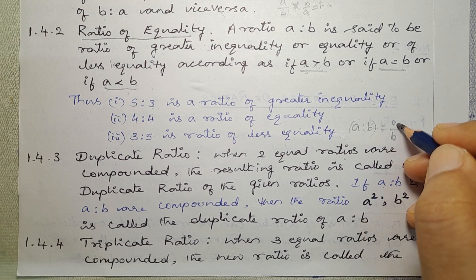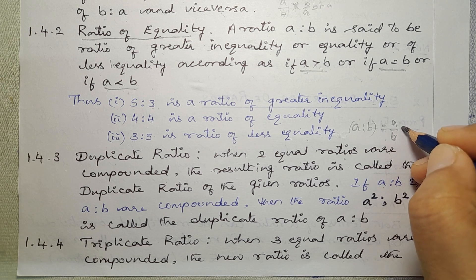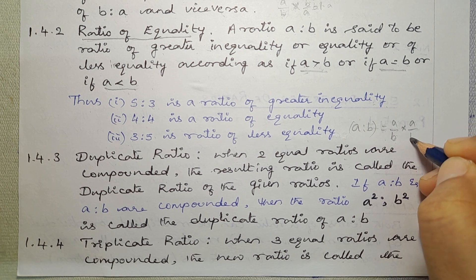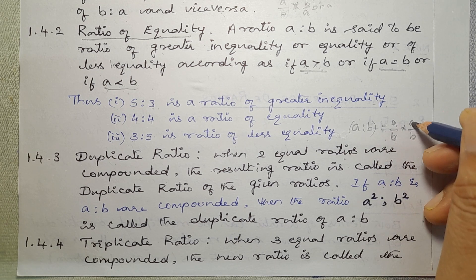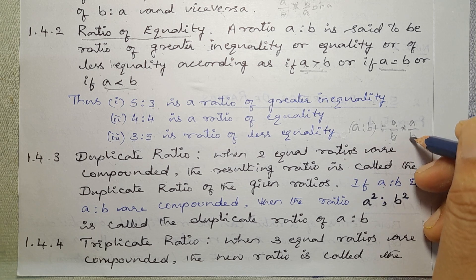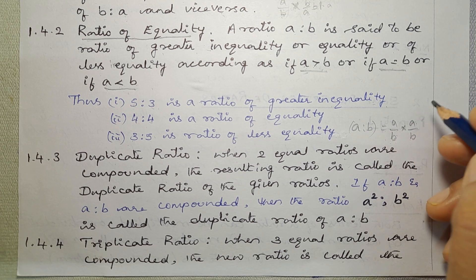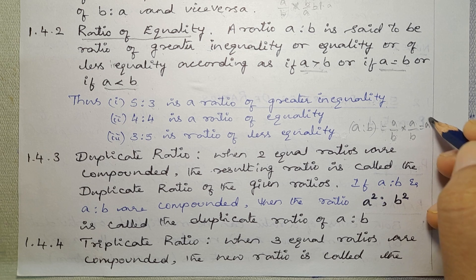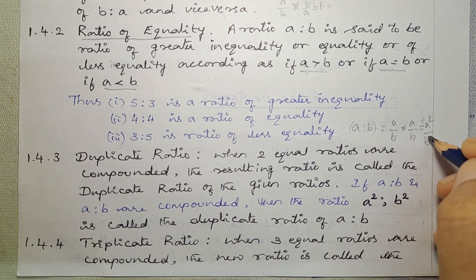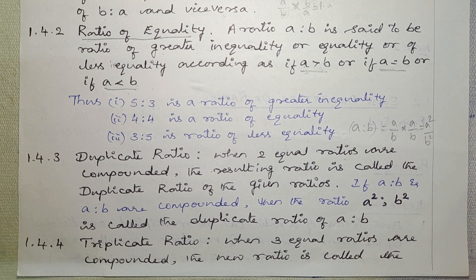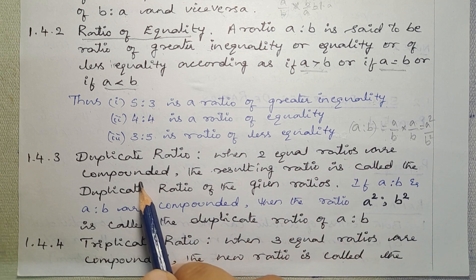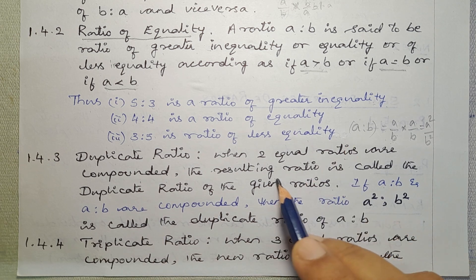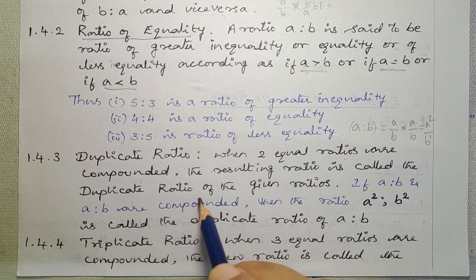A is to B compounded with A is to B — multiply antecedent by antecedent and consequent by consequent. So A × A = A squared, divided by B × B = B squared. When two equal ratios are compounded by multiplication, the resulting ratio is called the duplicate ratio of the given ratio.